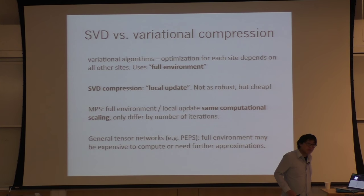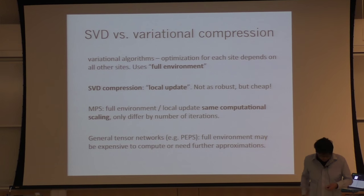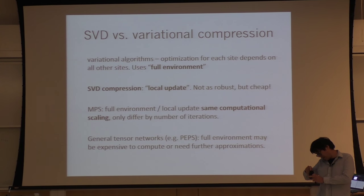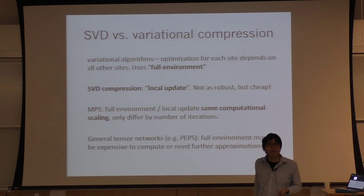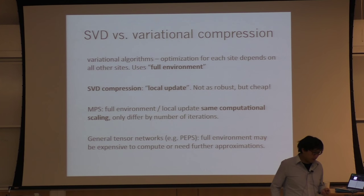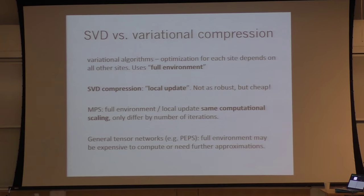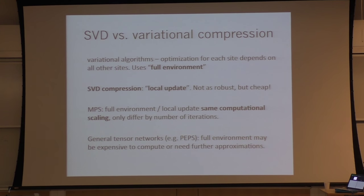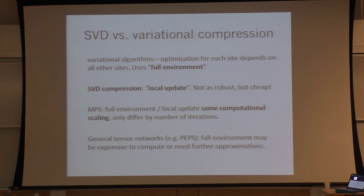I've got about 50 more minutes on matrix product states. I'm going to talk very quickly about energy optimization, which will introduce the concept of time evolution, imaginary time evolution. Then I'll say something briefly about how symmetries occur in matrix product states, and won't go into the classification of states in topological order, just the introduction to understand how symmetries occur. And then from there, I'll move on to general tensor networks.